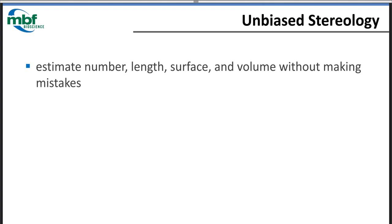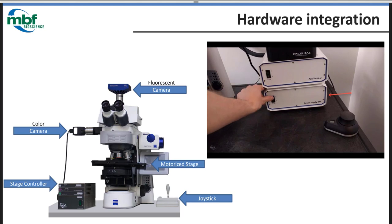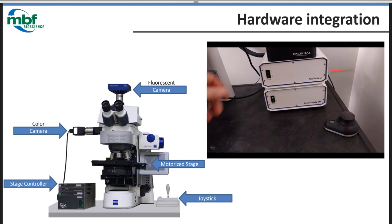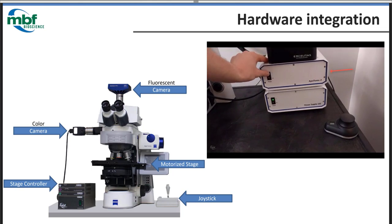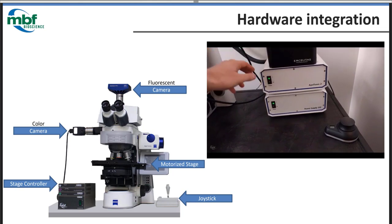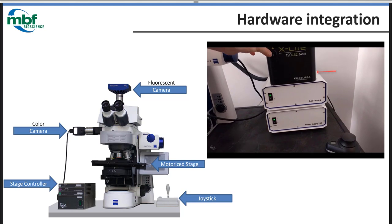Stereology is not limited to the field of neuroscience. In fact, its early use was in geology. But the reason we're gathered here today is because we want to get data — estimates of number, length, surface, and volume from images gathered with a microscope. Nate's going to describe a typical system used for this.